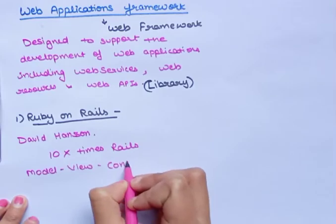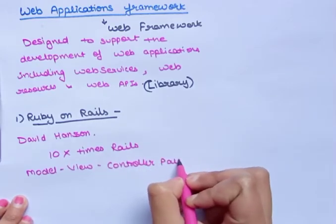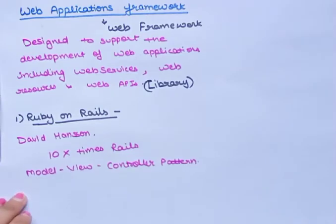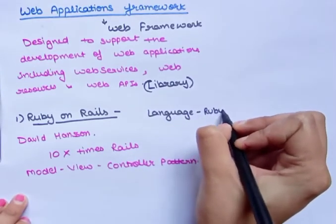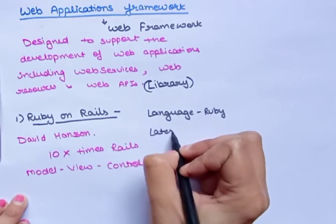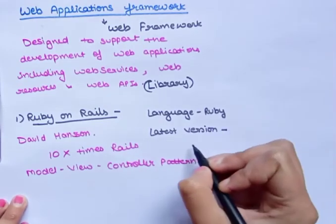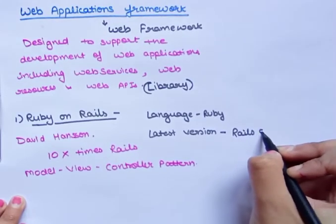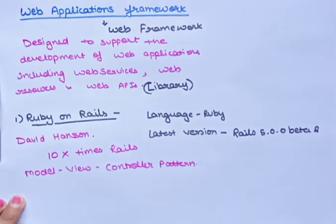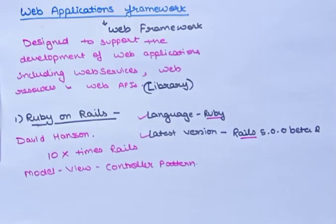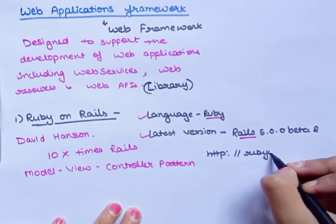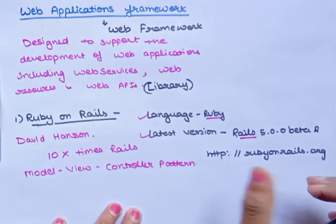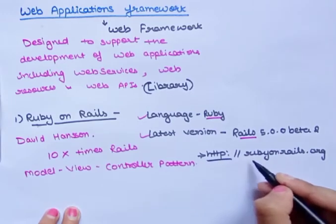Rails uses the Model-View-Controller pattern. As its name implies, Ruby means it uses a language named Ruby. Its latest version is Rails 5.0.0 Beta 2, that's why its name is Ruby on Rails.